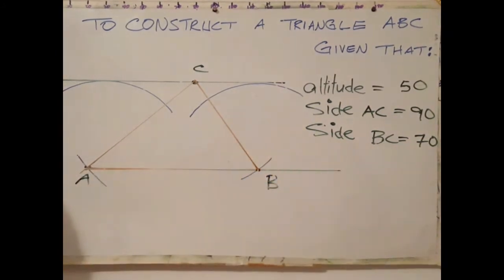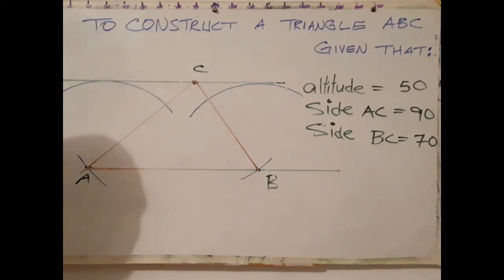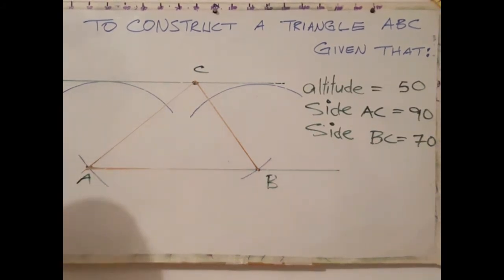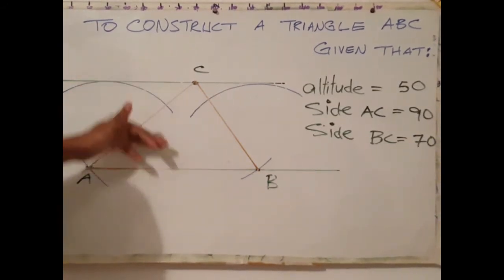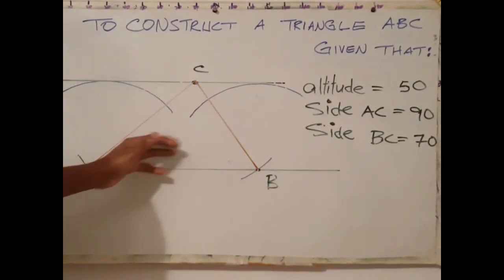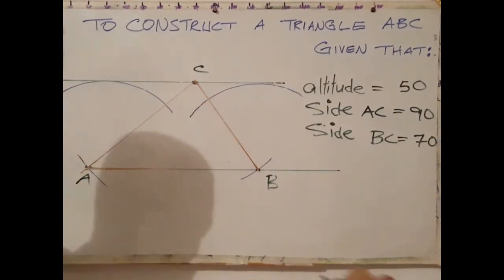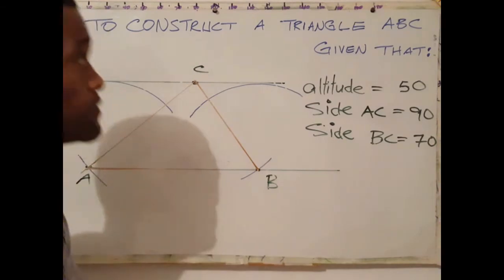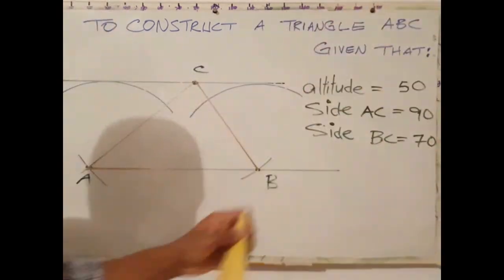And that is it. That's how we draw or construct a triangle when given the altitude or the vertical height and two sides. I think I should label this.